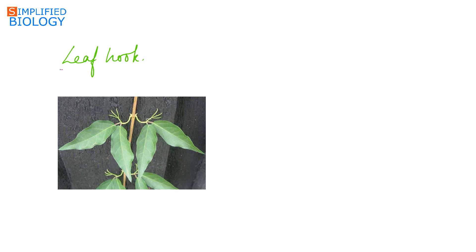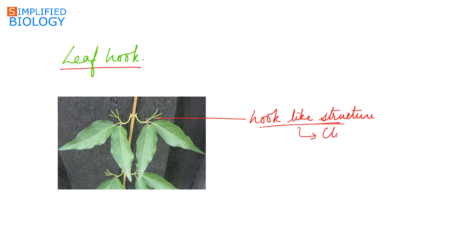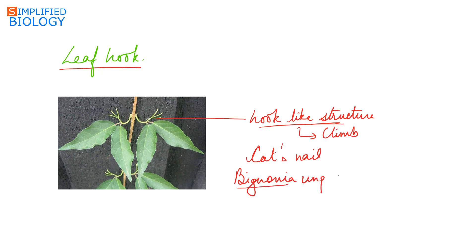Next, leaf hook. In some plants, the leaflets of a compound leaf get modified into a hook-like structure that helps the plant to climb by clinging to support. It just appears like a cat's nail. The best example of this is cat's nail, that is Bignonia unguiscati.